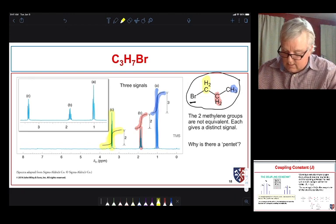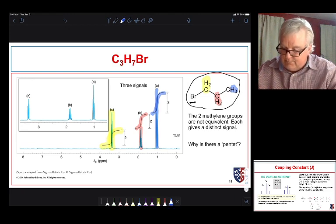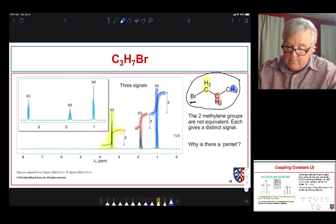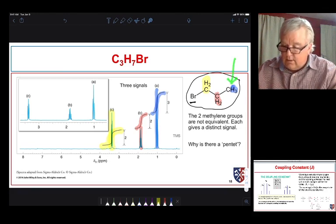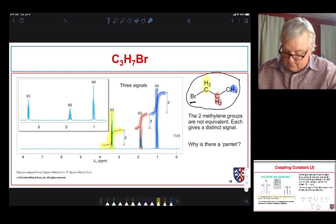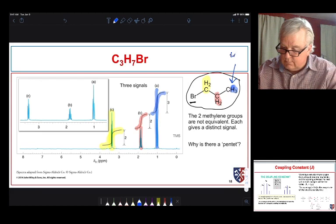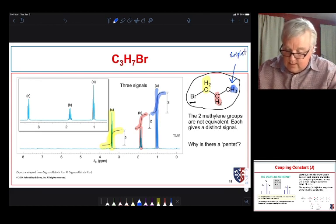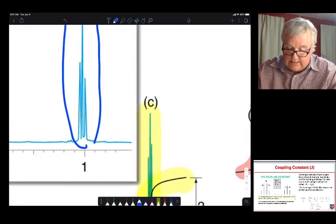Let's take a look at the splitting then. So our peak that's furthest upfield, right here, there's a CH3 group next to a CH2 group. We expect to see a triplet. That integrates for 3. This integrates for 3. Here it is here. And it is a nice triplet. Let's expand it and we see it's a triplet.